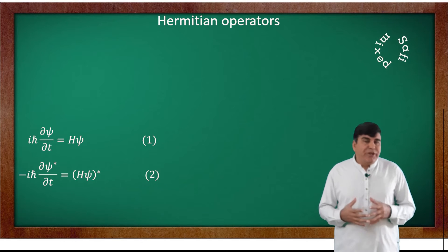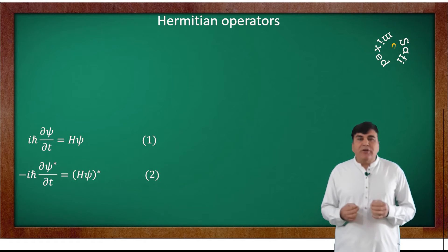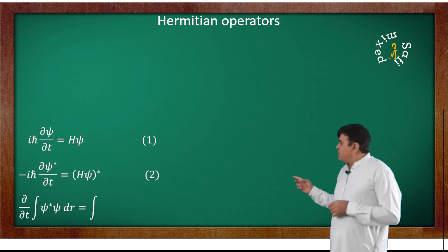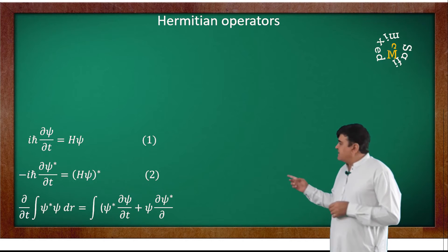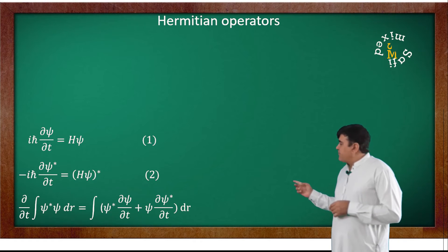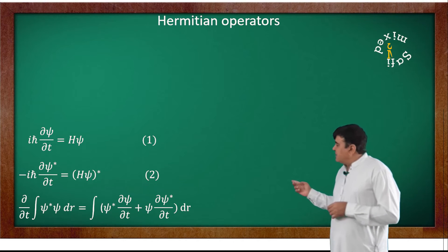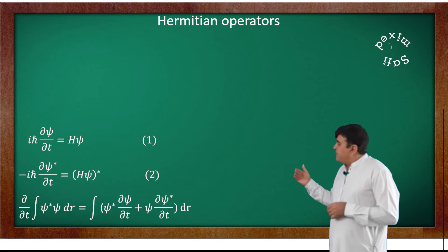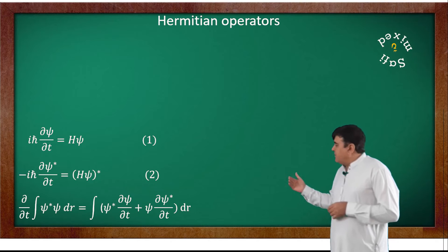Now let us differentiate the integral of the product ψ*ψ in the form ∂/∂t ∫ψ*ψ dr = ∫(ψ* ∂ψ/∂t + ψ ∂ψ*/∂t) dr.